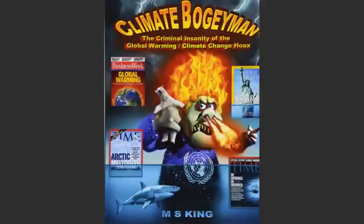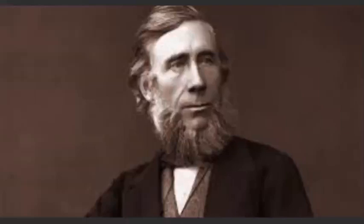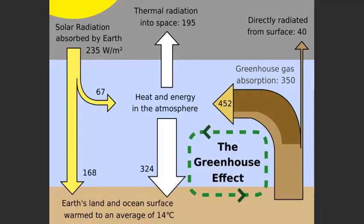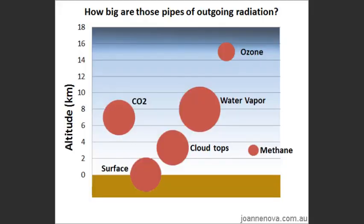Even the carbon dioxide theory is not new. The basic idea was first precisely stated in 1861 by the noted British physicist John Tyndall. He attributed climatic temperature changes to variations in the amount of carbon dioxide in the atmosphere. According to the theory, carbon dioxide controls temperature because the carbon dioxide molecules in the air absorb infrared radiation.